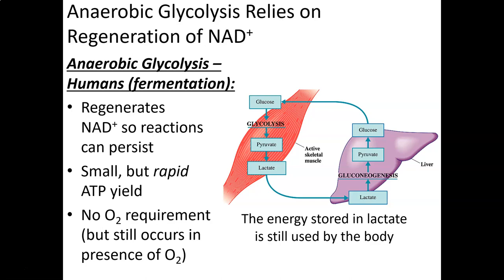We actually store a lot of energy in lactate. When we're done exercising, through a process called gluconeogenesis — sometimes called the Cori cycle — we can take lactate back to pyruvate, and from pyruvate go backwards through glycolysis to make glucose. Gluconeogenesis literally means making new glucose: glucose (sugar), neo (new), genesis (make). Making new glucose from non-carbohydrate precursors is gluconeogenesis. That energy is not lost — it's stored as lactate, and we can reverse things to keep some of that energy.